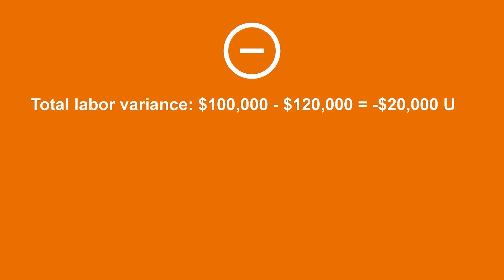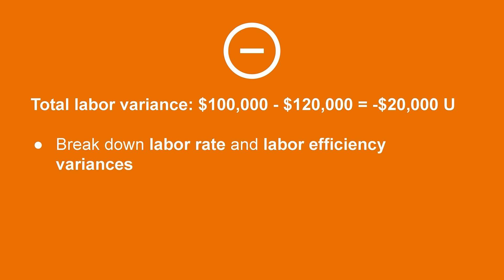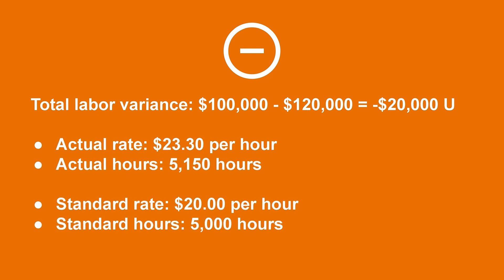Let's go back to the direct labor variance analysis from earlier, where the company had a $20,000 unfavorable total labor variance — meaning they spent $20,000 more on direct labor than they had originally planned. While this gives management some information, it doesn't tell the whole story. In order to understand what went wrong, it's important to break this variance down further into both labor rate variance and labor efficiency variance. Here we can see the total variance was $100,000 minus $120,000, which equaled a negative $20,000 unfavorable variance.